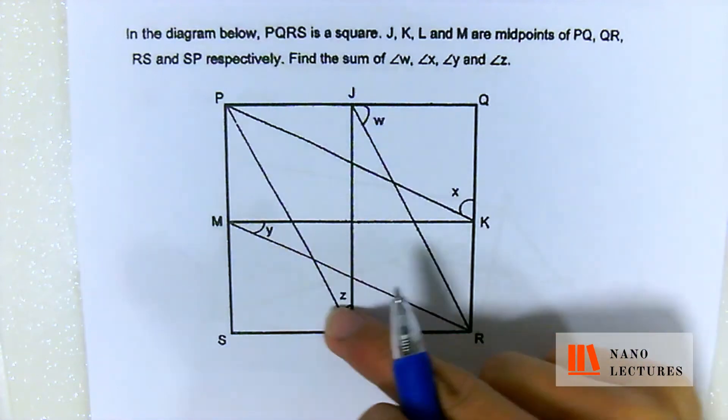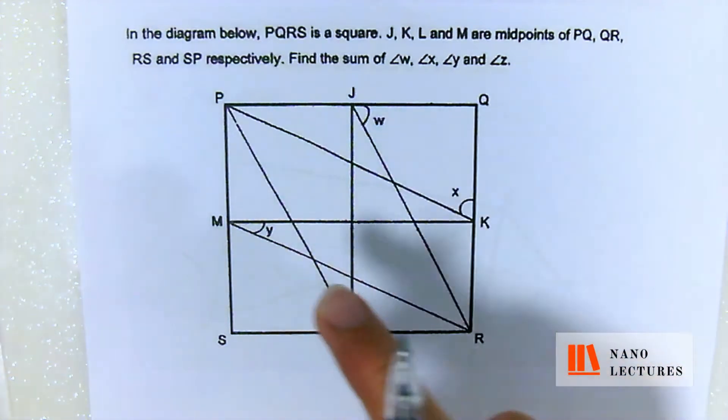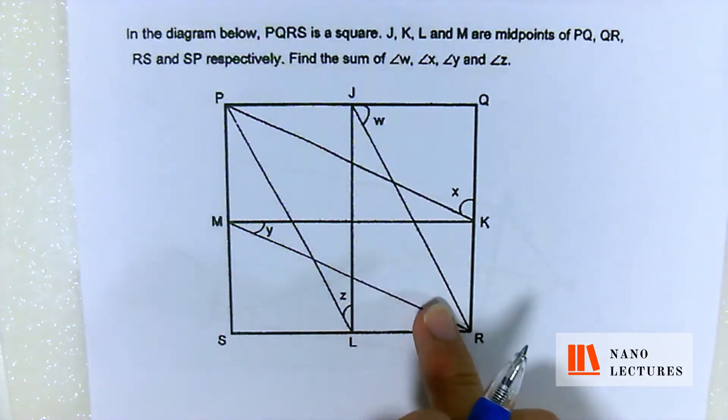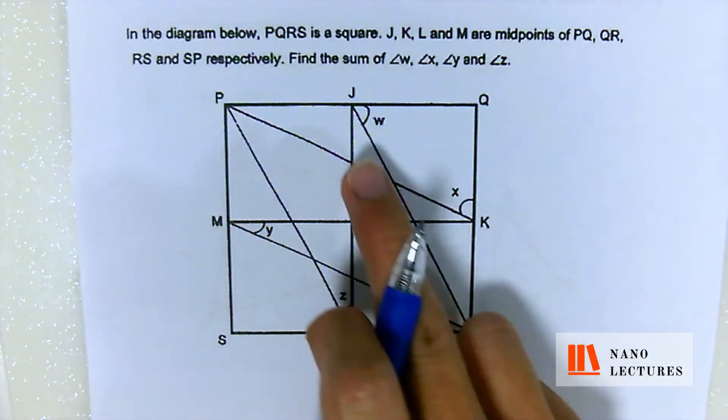So the moment they come up with questions like this, you need to know that there's actually a trick involved. Now, you look at Y. Y is actually bounded by this line as well as this line, and also by this line, and also by this line.